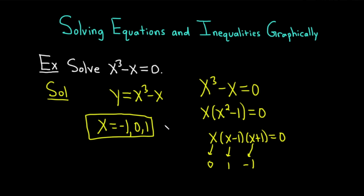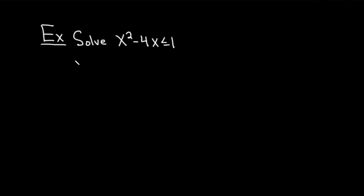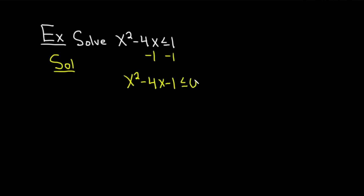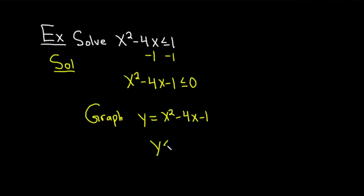Let's do a harder example where the calculator is extremely helpful — an inequality. The question is to solve x squared minus four x less than or equal to one. The most important thing is to first get zero on the right-hand side. Subtract one from both sides to get x squared minus four x minus one less than or equal to zero. We'll graph y equals x squared minus four x minus one and find the x values for which y is less than or equal to zero.